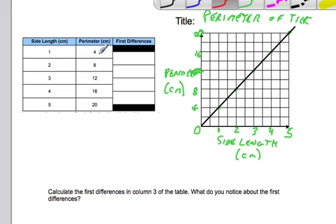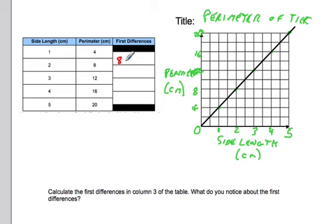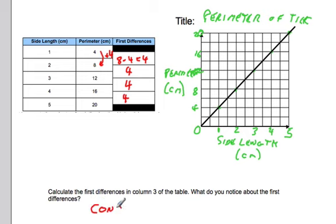Now we have to calculate the first differences. What we want to know when we look at first differences is what we are increasing or decreasing by. We can calculate the first difference by subtracting each value from the next: 8 minus 4 is 4. So we're going from 4 to 8 — up 4. From 8 to 12, we're going up 4 as well. 12 to 16, up 4. And 16 to 20, up 4 as well. So our first difference is 4. When it asks what you notice about the first differences, the key word is that they are constant — the first differences are constant.